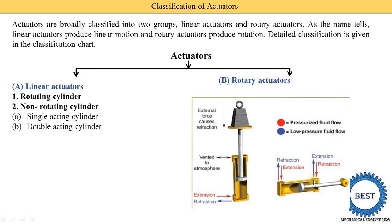That's why there is an extension arrow in the upper direction. When we need retraction, oil is supplied from this side and at the same time the oil on the left side of the piston is removed — this is called retraction. The piston rod end is connected to some application.